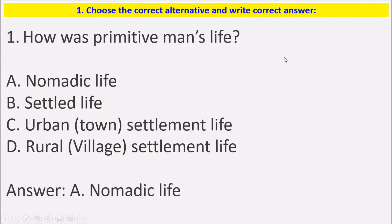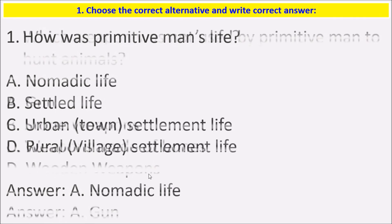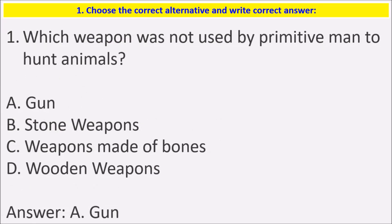Question 1: Choose the correct alternative and write the correct answer. The first one is: How was primitive man's life? Which weapons were used by primitive man to hunt animals?